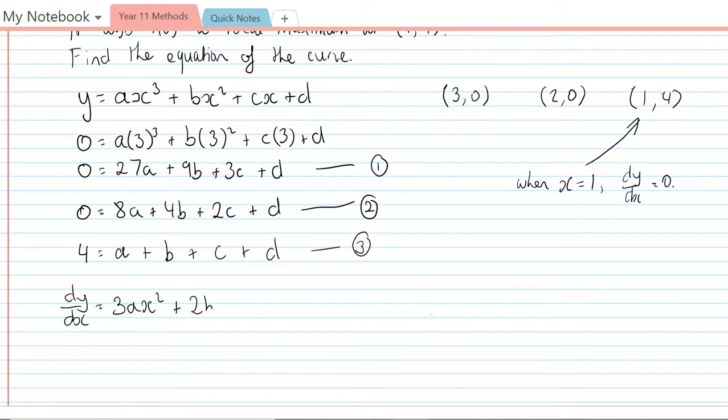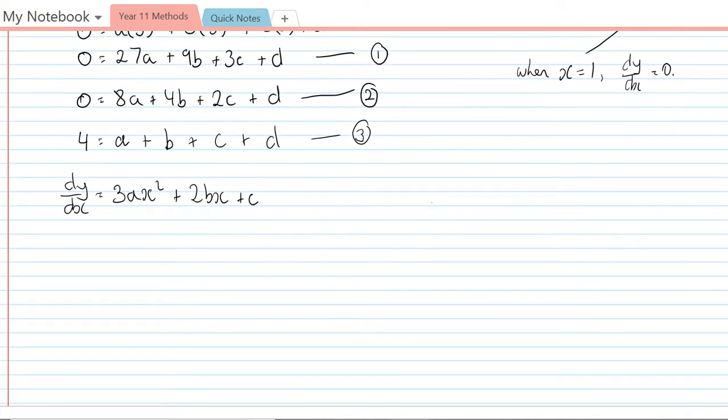Again I know that when x is equal to 1, the derivative is equal to 0. Subbing that into this equation, I'm going to have 0 = 3a + 2b + c, and that is my fourth equation, which now means we have sufficient information to be able to solve this.